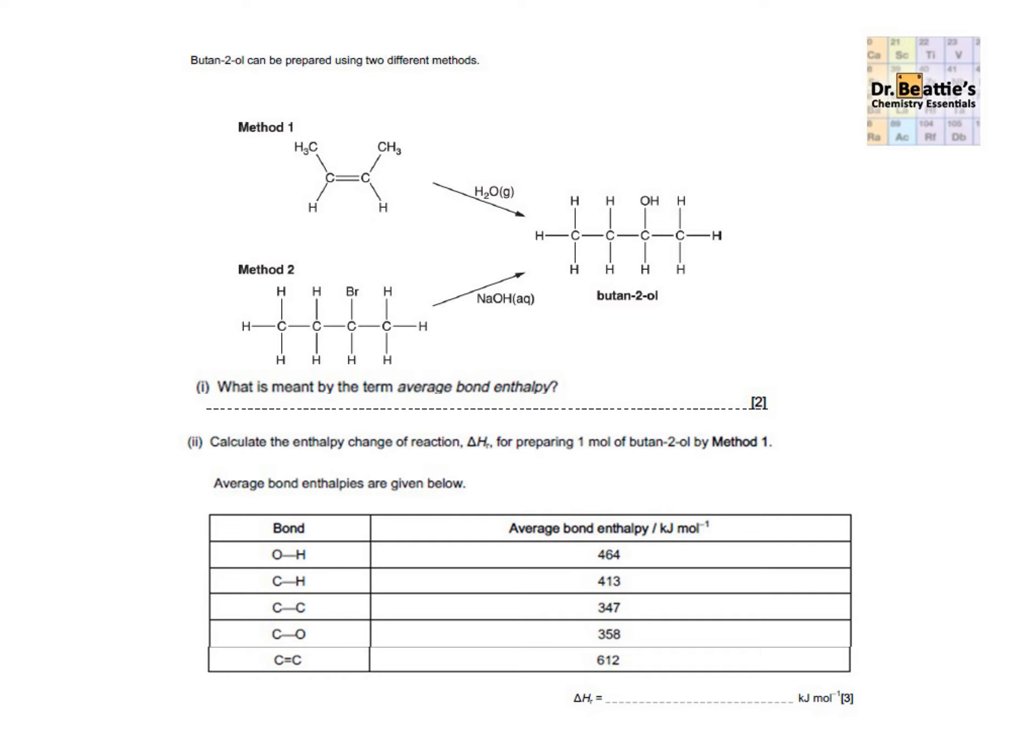Okay, so for the first question, what is meant by the term average bond enthalpy? The definition you're looking for in two parts is the average enthalpy change when one mole of bonds, for one mark, of gaseous covalent bonds is broken for the second mark. If for the second part of the question, you've got minus 42 kilojoules per mole, then you've got three out of three marks.